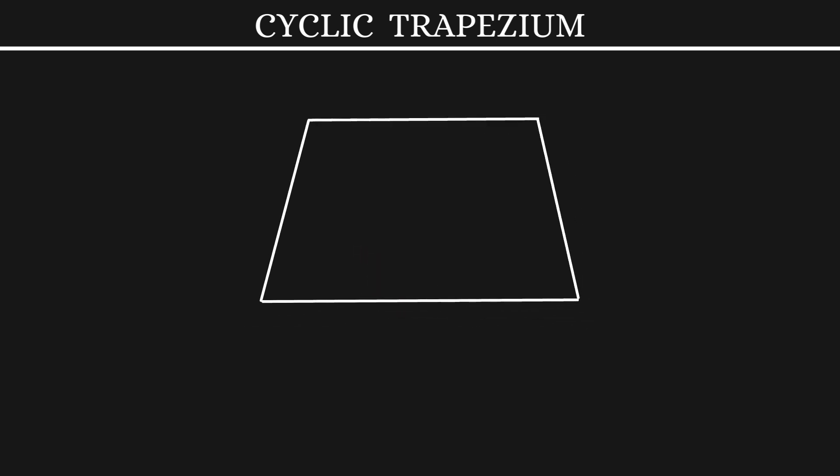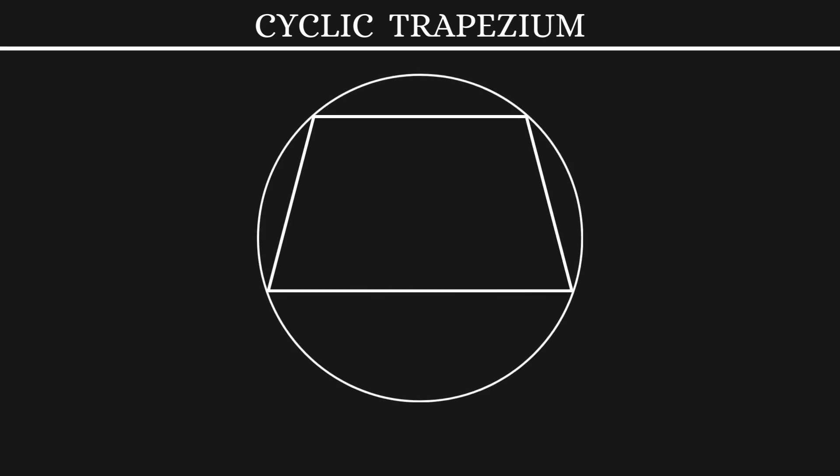We know that a trapezium is a quadrilateral with one pair of parallel sides. If a trapezium can be inscribed inside a circle, what we have is a cyclic trapezium.